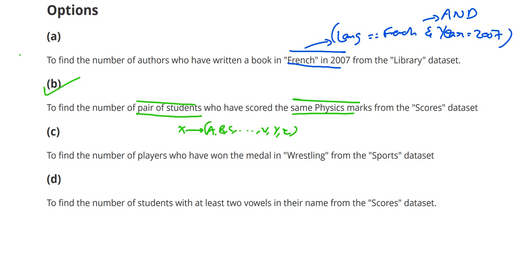Option C: to find the number of players who have won a medal in wrestling. This doesn't require a nested loop either, as it can be expressed simply as 'if X.sport is wrestling' — only one line is enough. Therefore, C is also not a correct answer.